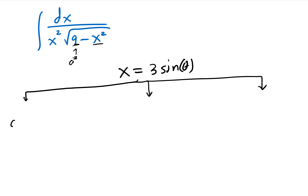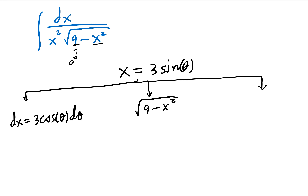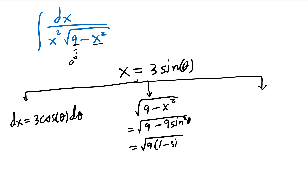Second, take the radical term √(9−x²) and rewrite it in terms of θ: substitute x = 3·sin(θ) to get √(9 − 9sin²(θ)) = √(9(1−sin²(θ))) = √(9cos²(θ)) = 3·cos(θ).